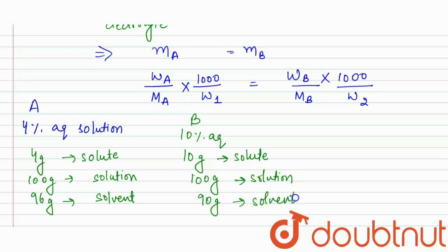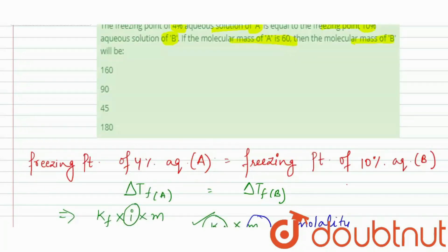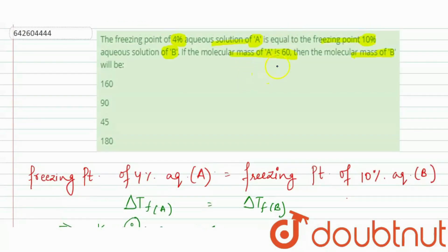From here, we have got the values. This will be our WA, this will be our WB. It is W2 and it is W1. And, if we talk about the molecular mass of A, it is given in the question. It is 60. And, we have to find the molecular mass of B.